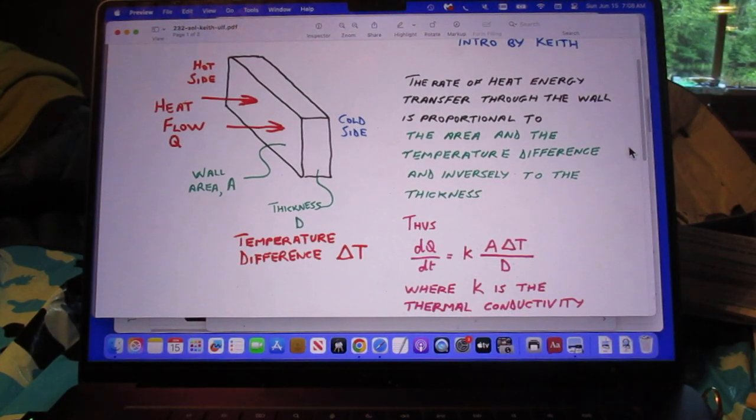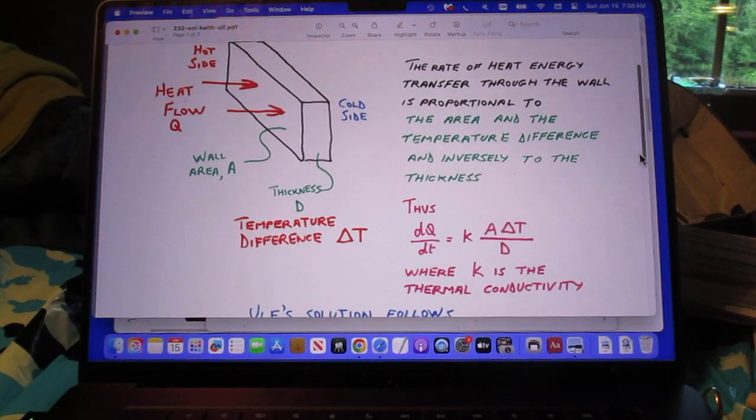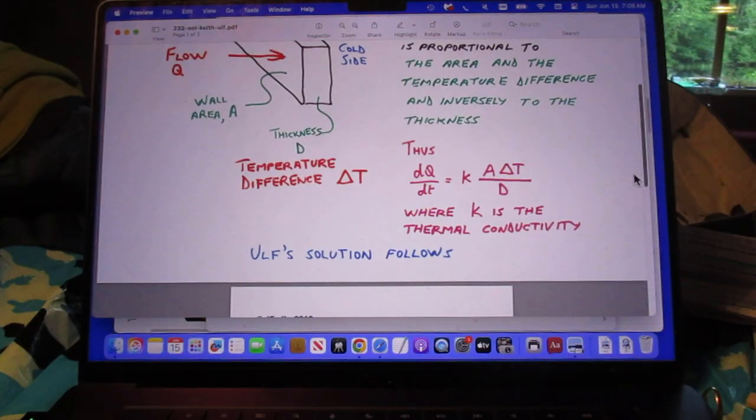The rate of heat energy transfer through the wall is proportional to the area and the temperature difference and inversely to the thickness. So there you see the key equation which is extraordinarily logic: dQ/dt is k, which is the thermal conductivity, times A times delta T divided by d.